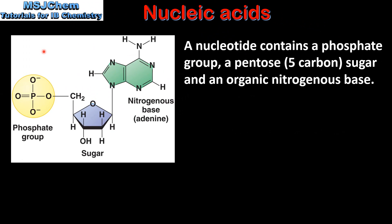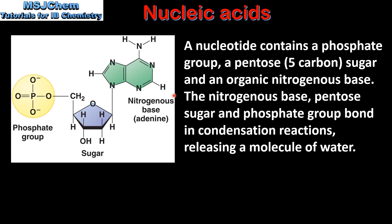Next we look at the nucleotides which make up the sugar phosphate backbone. A nucleotide contains a phosphate group, a pentose 5-carbon sugar, and an organic nitrogenous base. So on the left we have a phosphate group, we have the pentose sugar which has 5 carbon atoms, and on the right we have the nitrogenous base. The nitrogenous base, the pentose sugar, and the phosphate group bond in condensation reactions releasing a molecule of water.